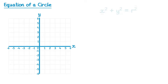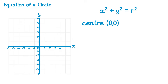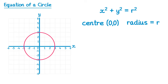Take the equation x squared plus y squared equals r squared. This corresponds to a circle where the center is (0, 0), or the origin, and radius r. For example, if we had this circle here, the equation would be x squared plus y squared equals three squared, since the radius is three, and of course three squared is just nine.